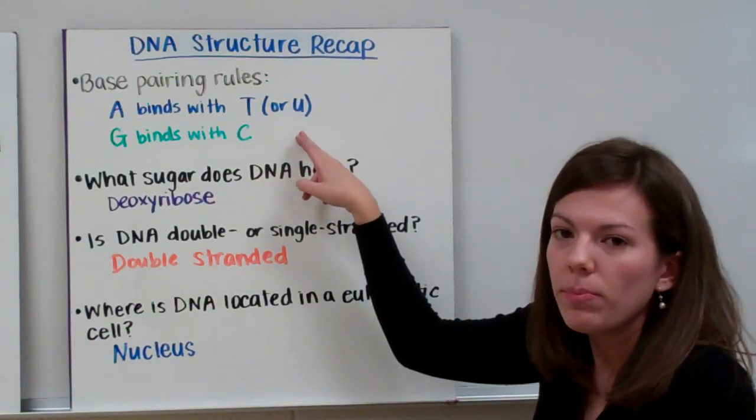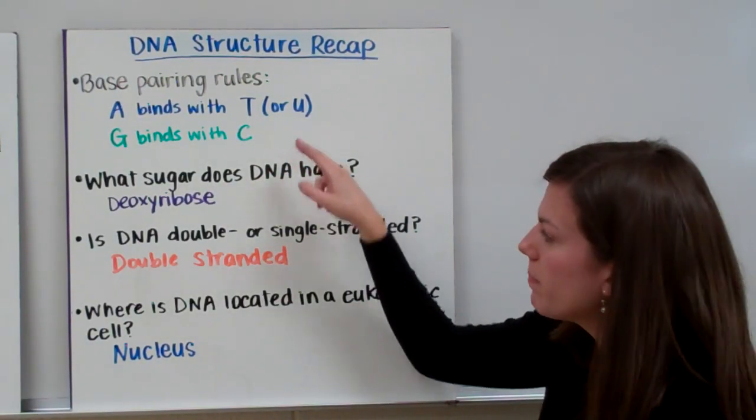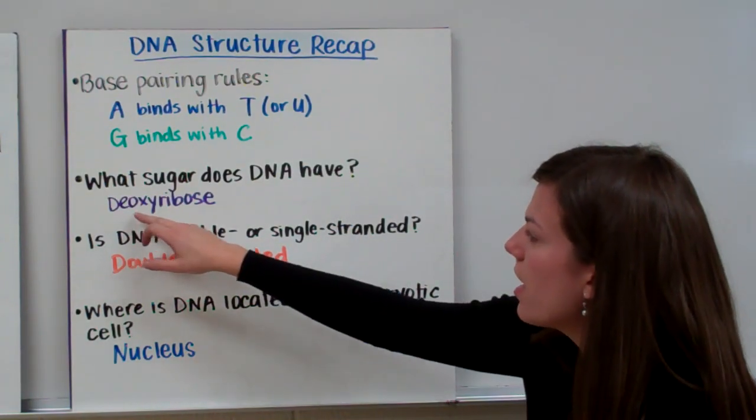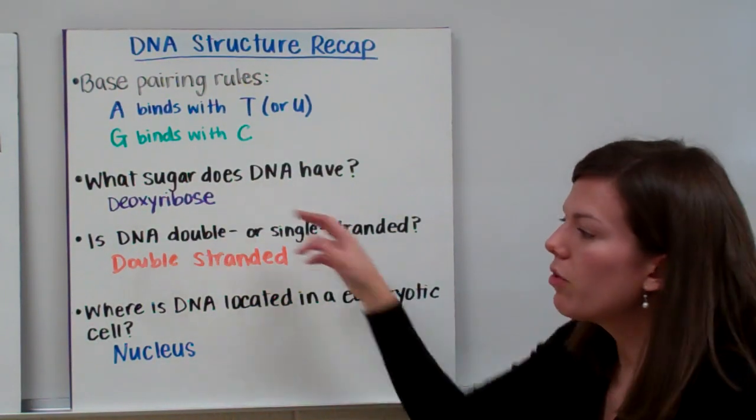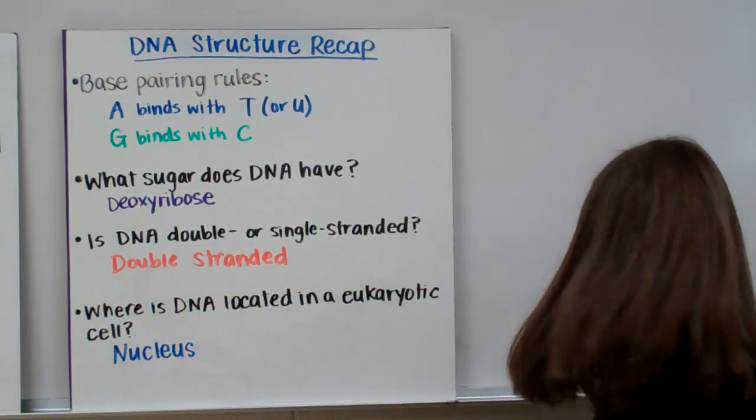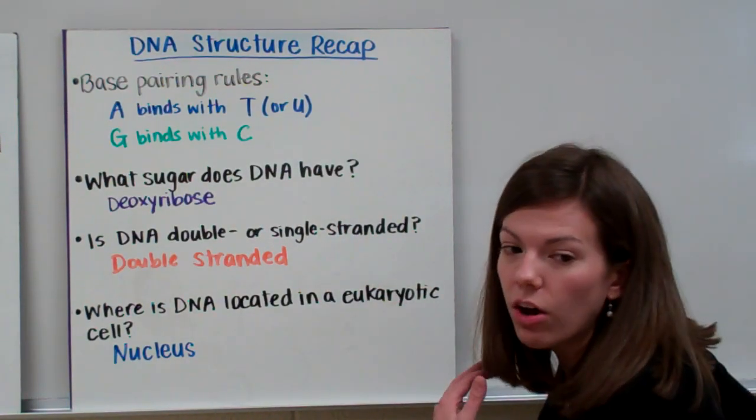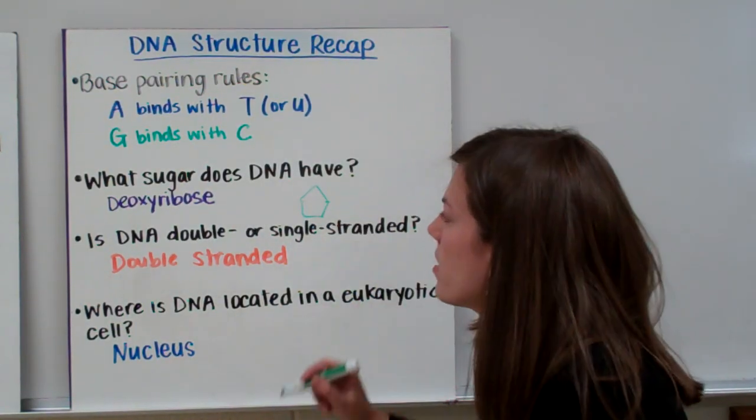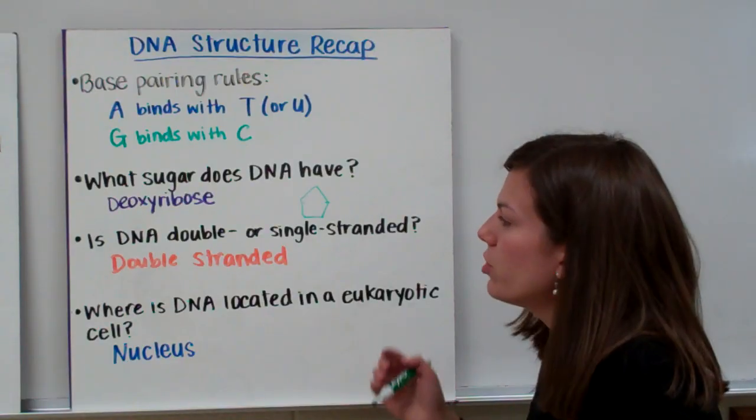Now remember, A can also bind with U, but that's only in RNA, not in DNA. What sugar does DNA have? DNA has deoxyribose sugar. If you look at the previous slide, the green pentagon structure is called deoxyribose. So when you see this in DNA, that's deoxyribose sugar.